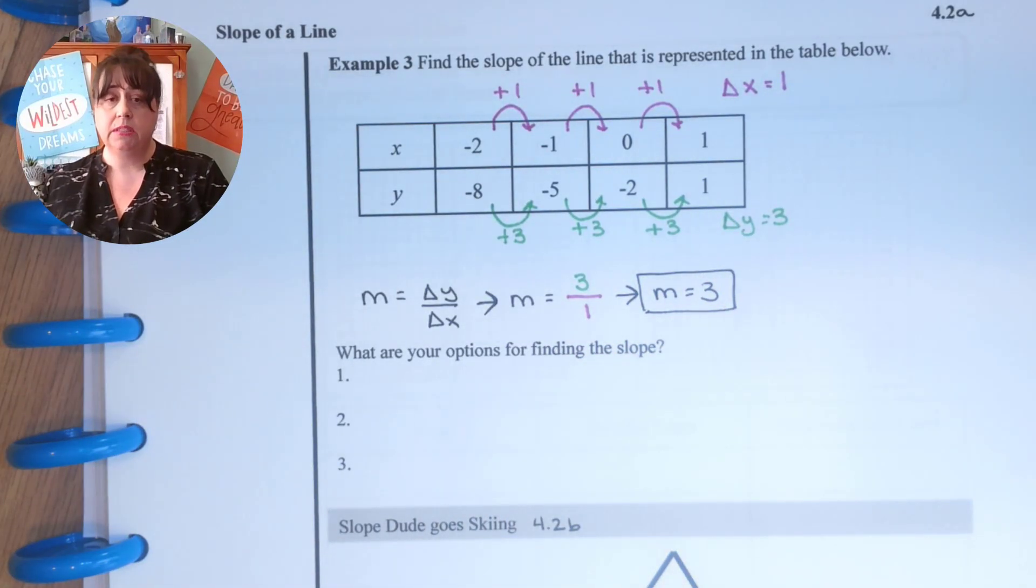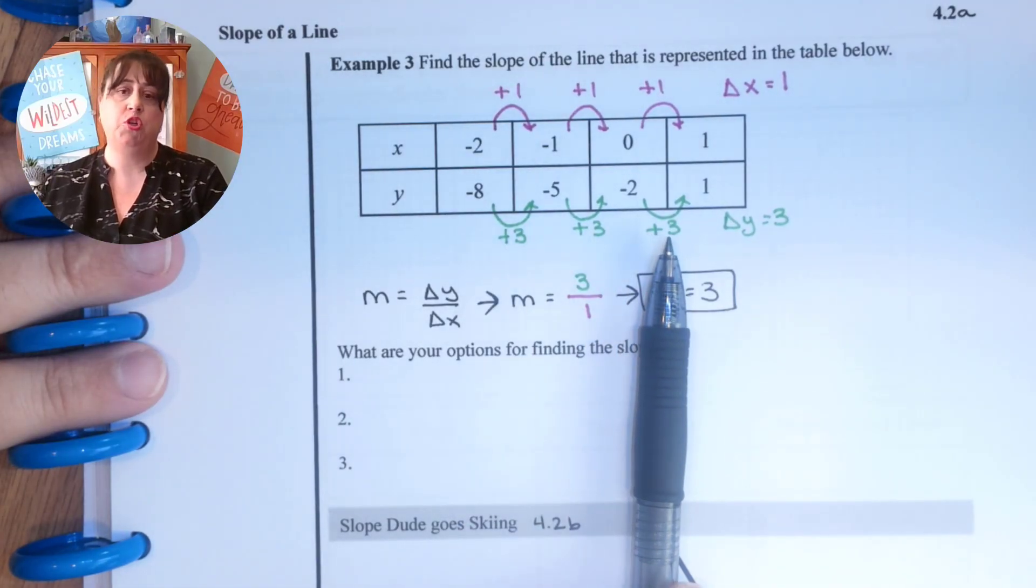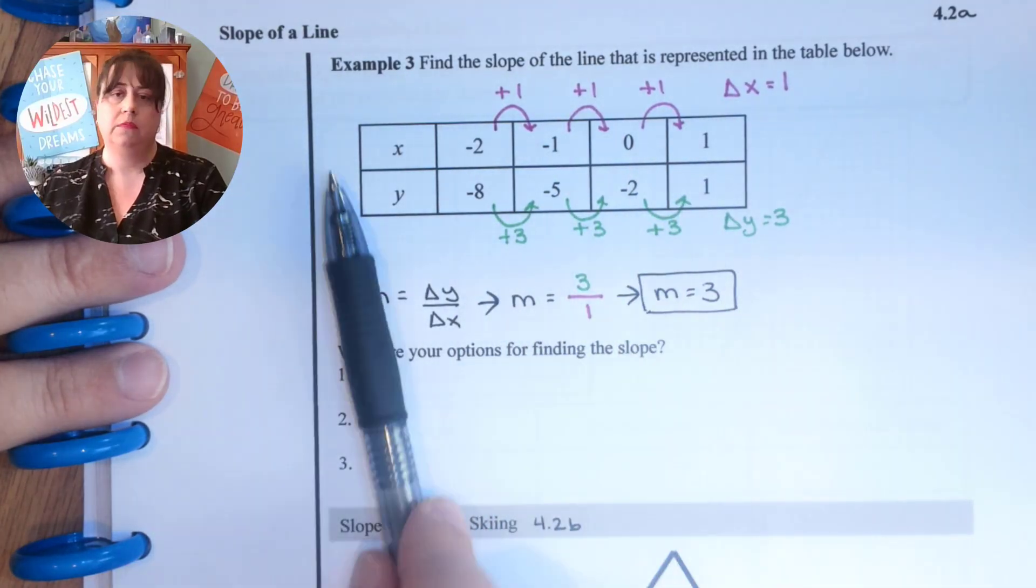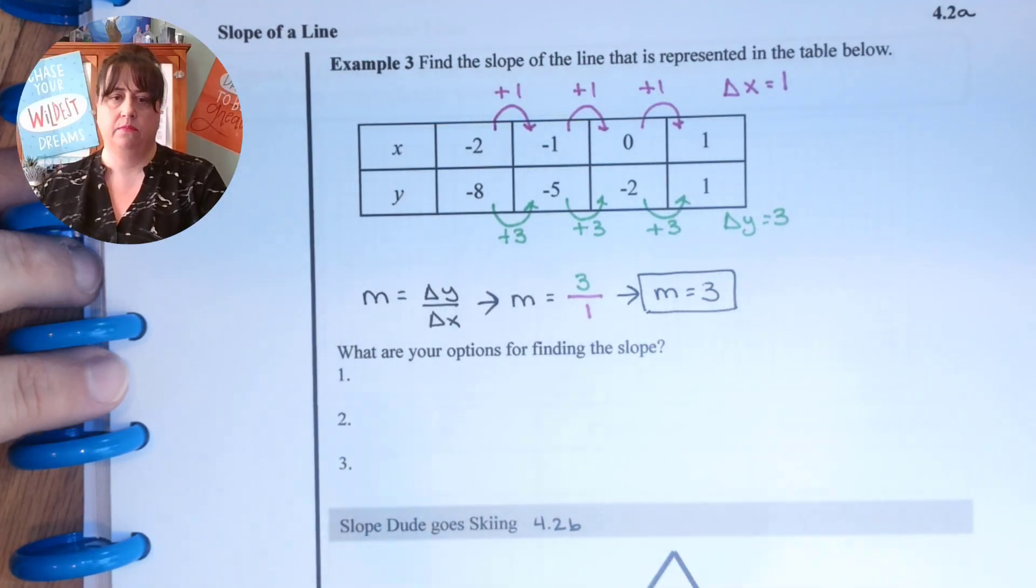Had this been something else, say this last one was a skip of two, so it went one, three, one, three, one, two. This would not be linear. This would not have a slope. So we want to be careful.